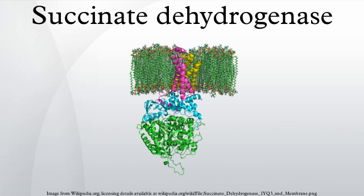Mammalian, mitochondrial, and many bacterial monomer SQRs are composed of four subunits: two hydrophilic and two hydrophobic. The first two subunits, a flavoprotein and an iron-sulfur protein, are hydrophilic. The second two subunits are hydrophobic membrane anchor subunits, SDHC and SDHD.